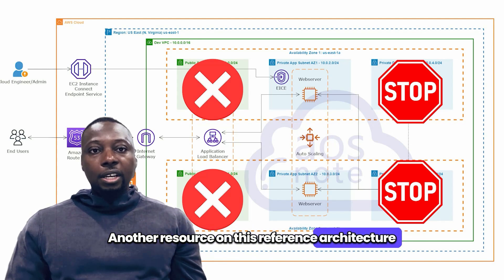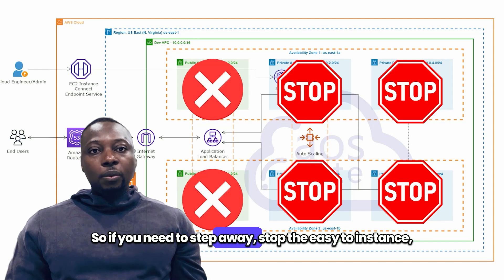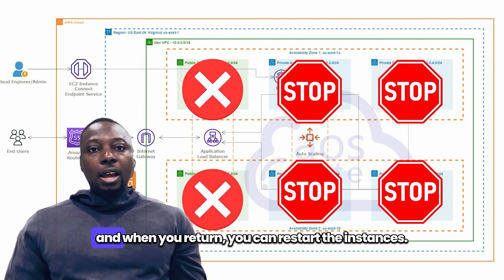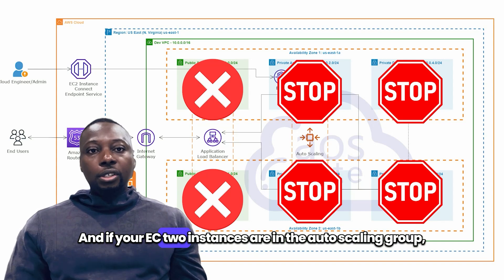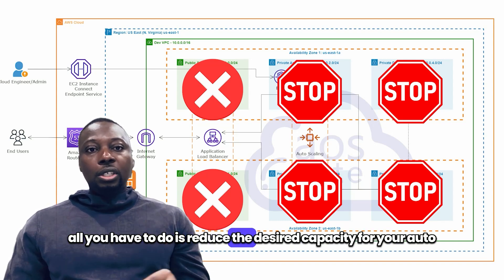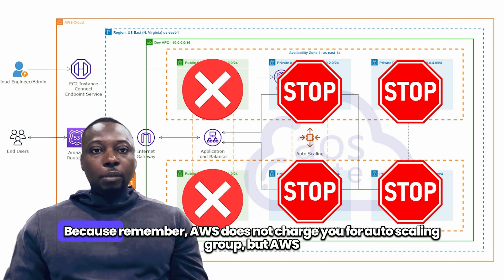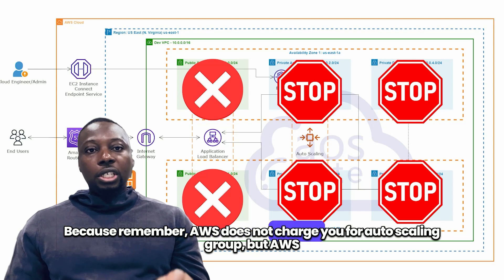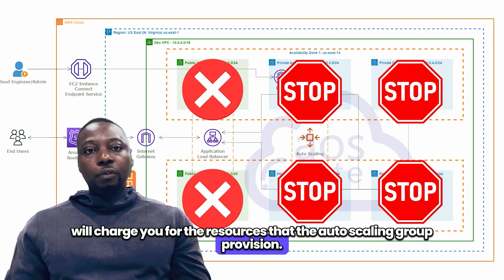Another resource you can stop is the EC2 instance. If you need to step away, stop the EC2 instances, and when you return, restart them. If your EC2 instances are in an Auto Scaling Group, reduce the desired capacity to zero and also change the minimum size to zero, because AWS does not charge you for the Auto Scaling Group itself, but will charge you for the EC2 instances it provisions.